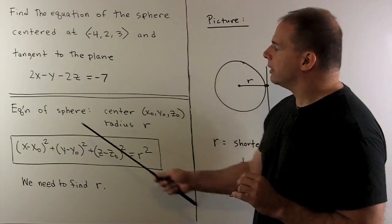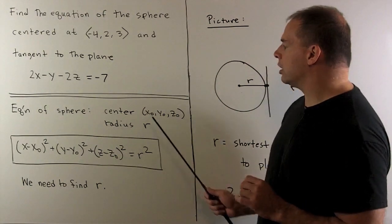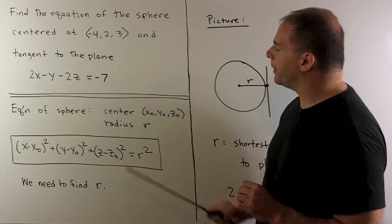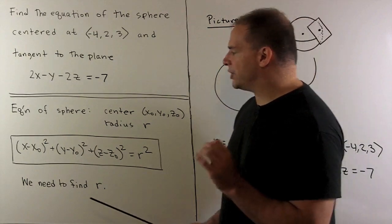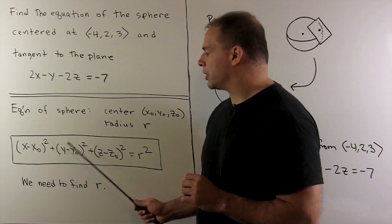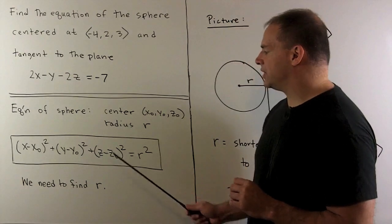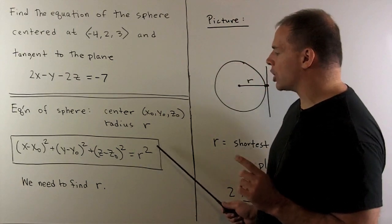So if I'm given a sphere with center (x₀, y₀, z₀) and radius r, the equation is given by (x - x₀)² + (y - y₀)² + (z - z₀)² = r².